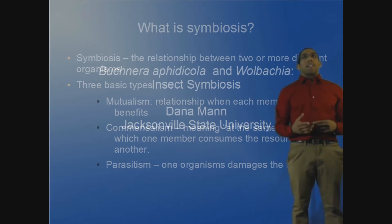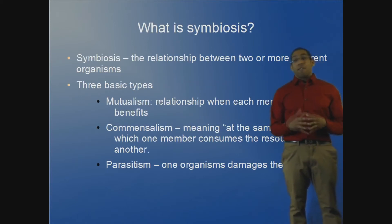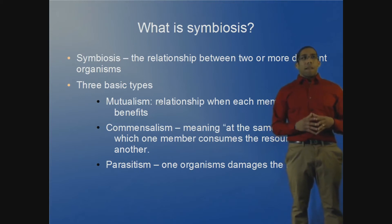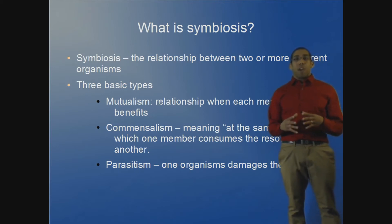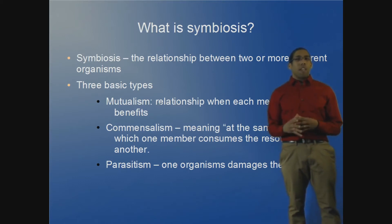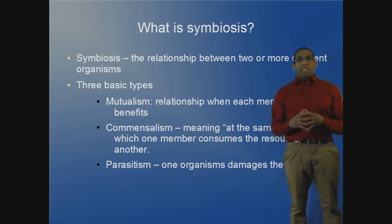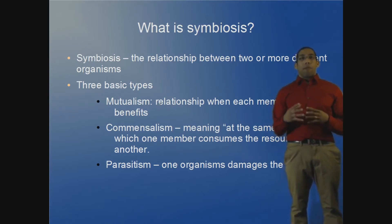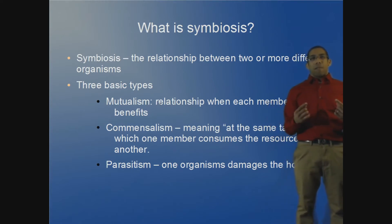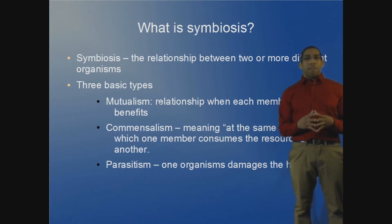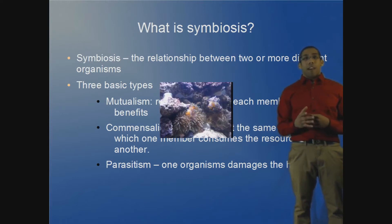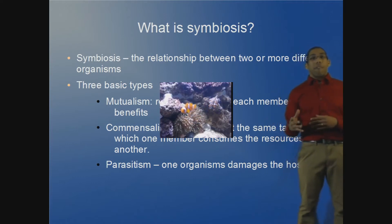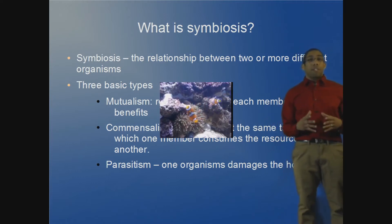The basic definition for symbiosis is the relationship between two unlike organisms for some common goal. There are three very separate, distinct categories in symbiosis. The first one is mutualism, where both parties benefit. The classic example is the clownfish and the anemone — the clownfish eats the bacteria off the anemone, while the anemone provides the clownfish with protection from prey.